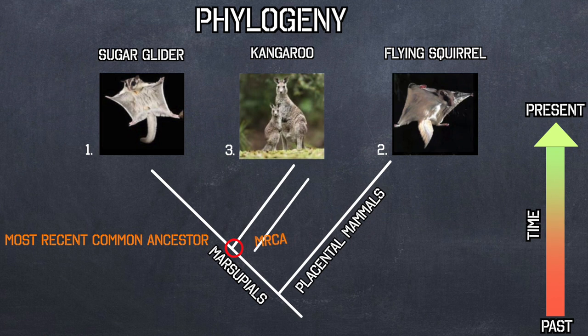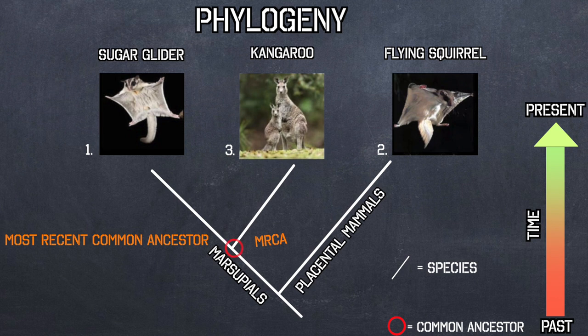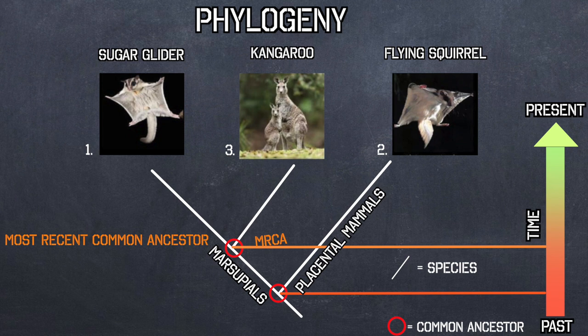So in this tree, each branch is a species and each node is a common ancestor. The sugar glider shares a more recent common ancestor with the kangaroo than it does with the flying squirrel, so they are more closely related despite what appearances may suggest.